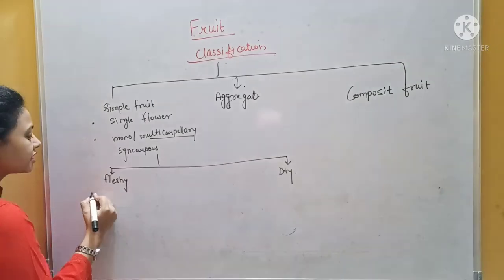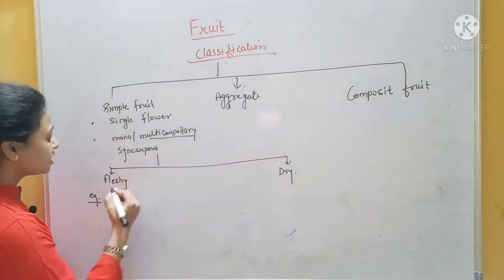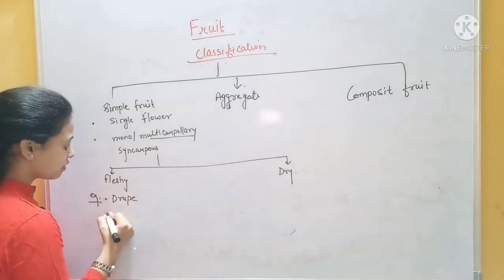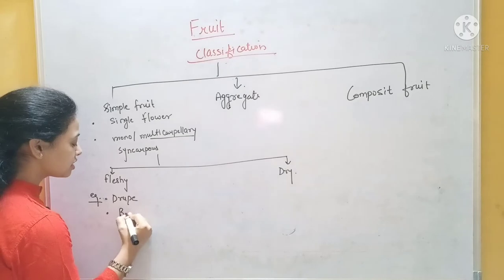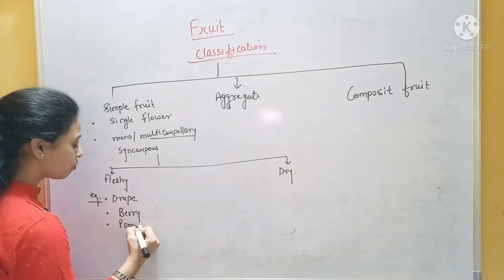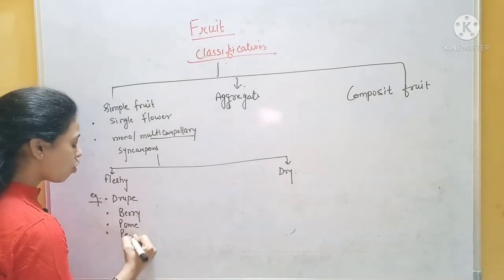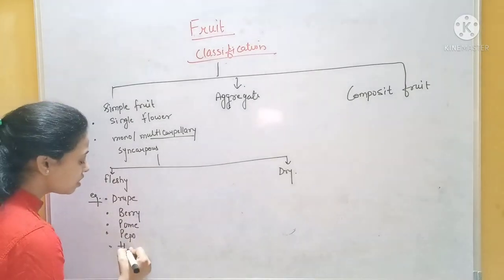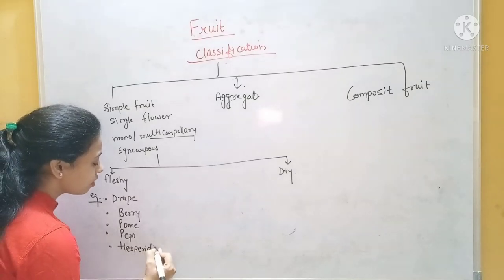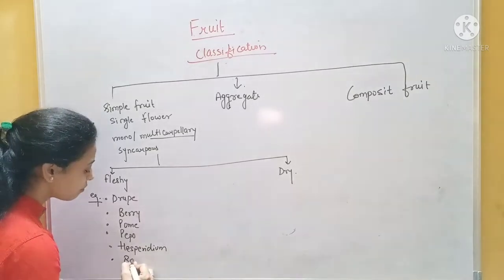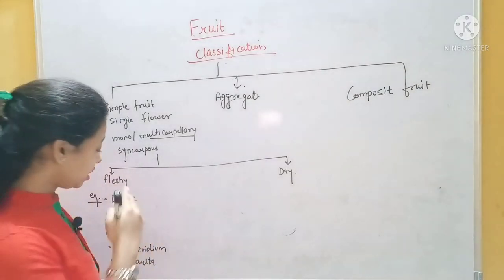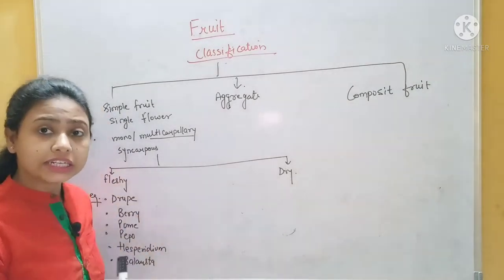What are the examples in fleshy fruit? In fleshy fruit, the examples are drupe, then berries, then pepo, then hesperidium. We will talk about all of these in detail when we discuss fleshy fruits.